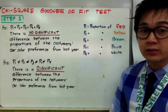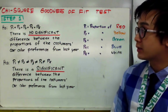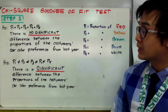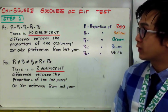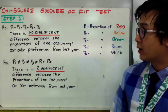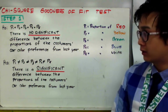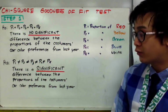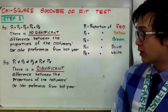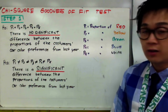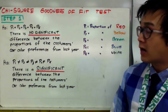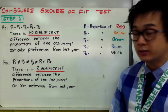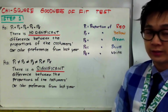To write it in the context of the problem, our null hypothesis is that we are testing if there is no significant difference between the proportion of customers choosing car color from last year. The alternative hypothesis is that there is a significant difference between the proportions of the customer's car color preference from last year. So those are our hypotheses, and now we can proceed to our conditions for our chi-square goodness-of-fit test.